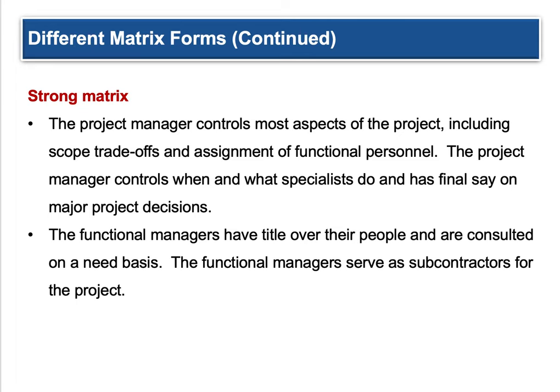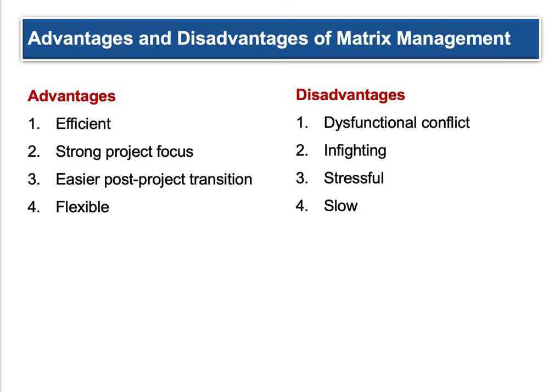In a strong matrix, the project manager controls most aspects of the project, including scope, trade-offs, and assignment of functional personnel — they have more power. The project manager controls when and what specialists do and has final say on major project decisions. This is kind of where the company is set up specifically for projects. Functional managers maintain title over their people and are consulted on a need basis, serving essentially as subcontractors to the project. Advantages of matrix management include efficiency, strong project focus, and easier post-project transition. Disadvantages include dysfunctional conflict from having two bosses, stress, and the risk of slow progress when people have too much on their plate.